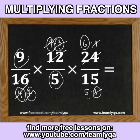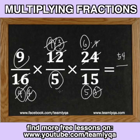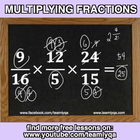So what you have left is 9 times 6 on top, which gives you 54, over 5 times 5, which is 25. So the answer is 2 and 4 over 25 — because 25 goes into 54 twice with 4 remaining. This is much faster than multiplying everything first and then reducing to lowest terms.